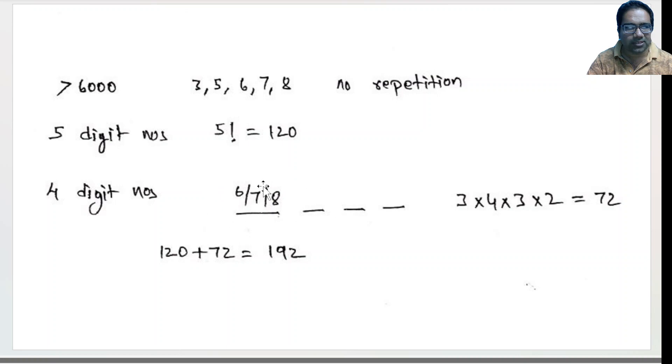Then we have 3 options here, and then since no repetition is allowed, 4 options here, 3 options here, 2 options here. So 3 times 4 times 3 times 2 which is 72. So the total number of numbers that are available is 120 plus 72 which is 192, right guys?